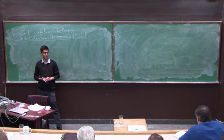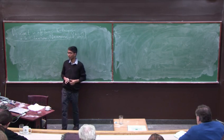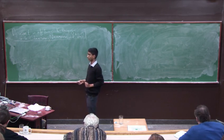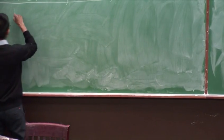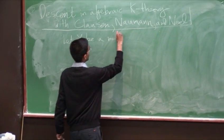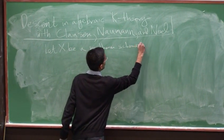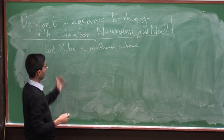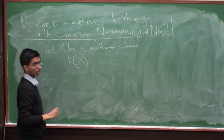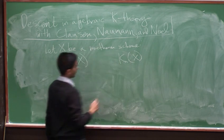All of this really begins with Thomason's theorem, Thomason's descent theorem, and the algebraic K-theory of rings or schemes. So I'm going to start by recalling how that goes. So let X be a scheme, let's say a Noetherian scheme. So one of the invariants of X in which we might be interested is the algebraic K-theory spectrum K of X, or its homotopy groups K_n of X, the algebraic K-groups of X.